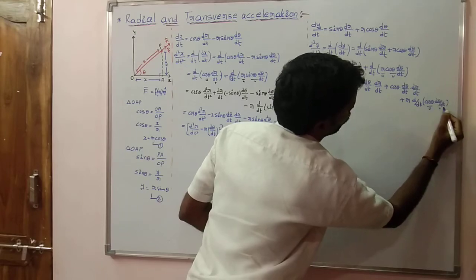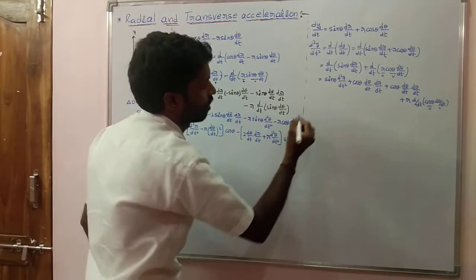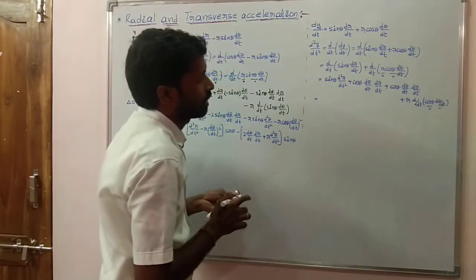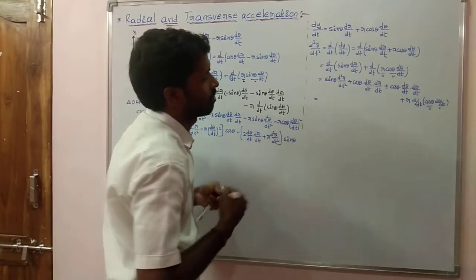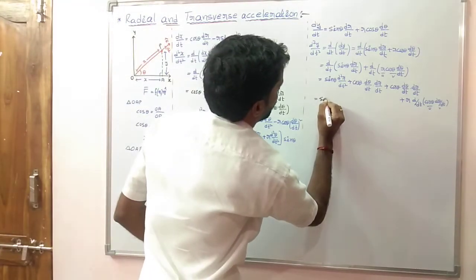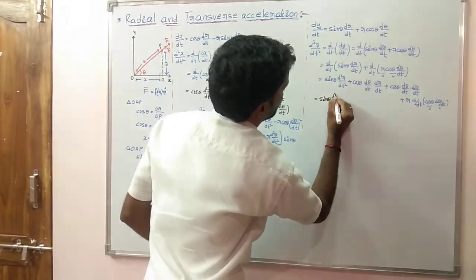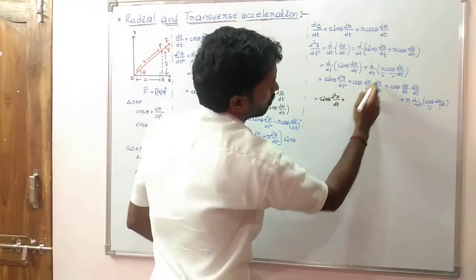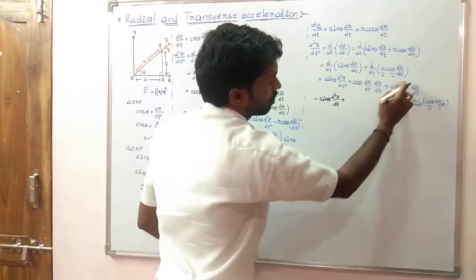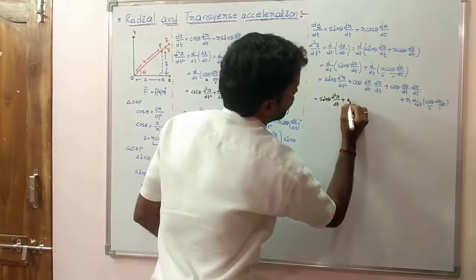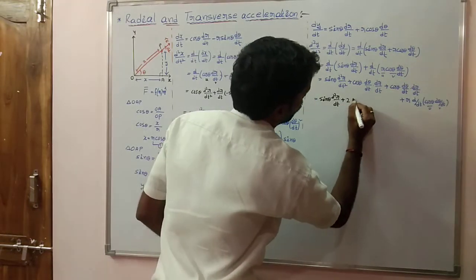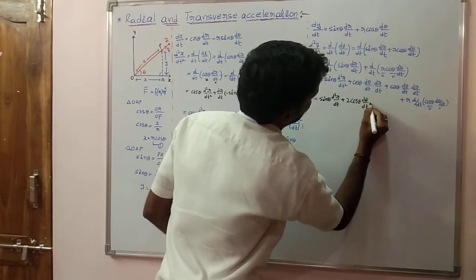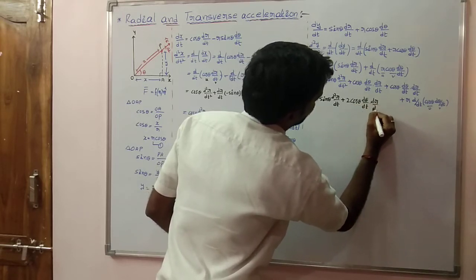Again applying the uv formula here, we get sin theta into d theta/dt and cos theta into d theta/dt terms. Collecting those two terms gives 2 cos theta into d theta/dt into dr/dt.